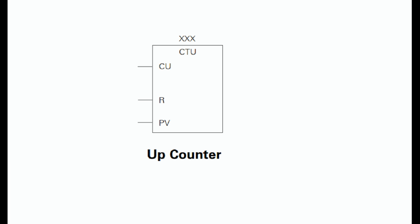Up counter: The up counter counts up from a current value to a preset value (PV). Input CU is the count input — each time CU transitions from a logic 0 to a logic 1, the counter increments by a count of 1. Input R is the reset. A preset count value is stored in the PV input. If the current count is equal to or greater than the preset value stored in PV, the output bit Q turns on.